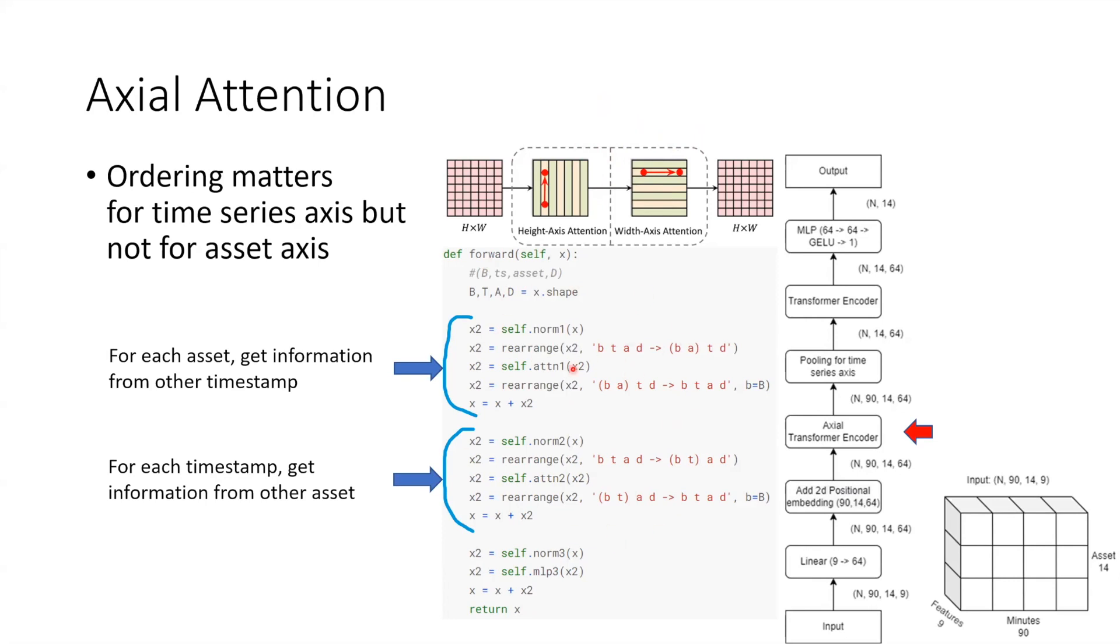One is for the time series axis and the other one is for the assets axis. Here is the PyTorch code. The first block is the self-attention in the time series axis, so each node here is trying to get information from other timestamps within the same asset. The second block is self-attention in the assets axis, so this time each node is trying to get information from other assets within the same timestamp. In this way the model can learn the interaction between different assets and can also learn the sequential information at the same time without any information loss.